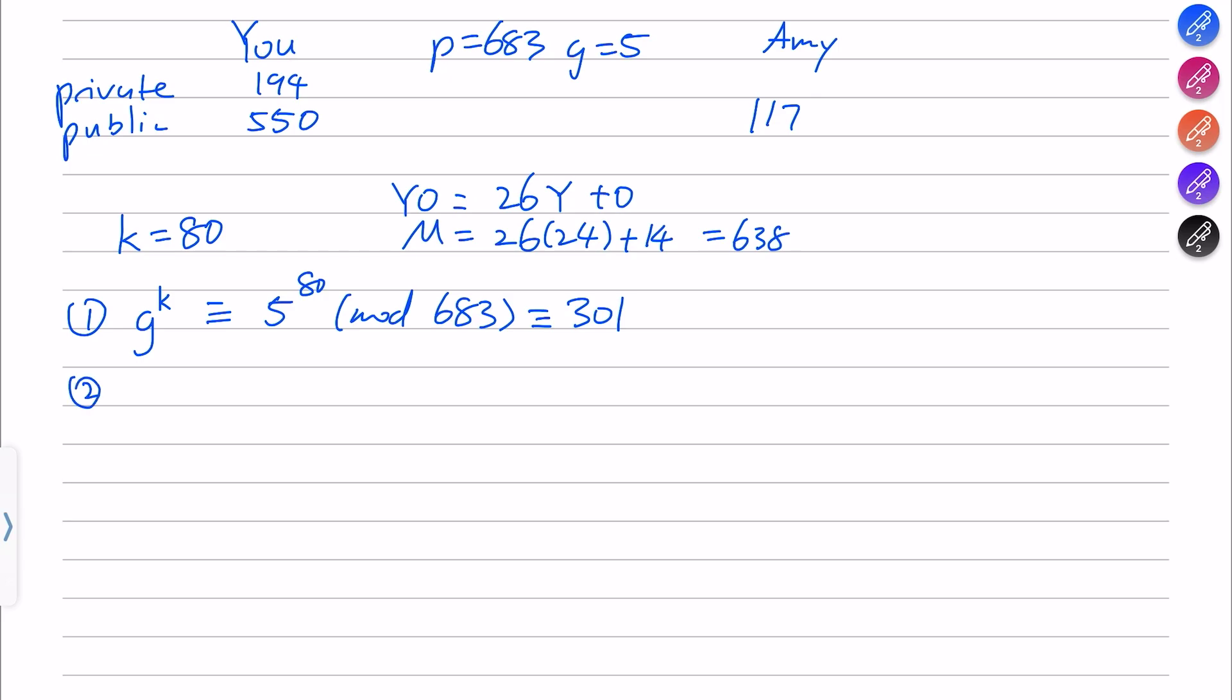And now you're going to calculate m times g a sub b to the k. You know m is 638. g to the power of a sub b is basically Amy's public key, 117. k as you've chosen is 80, and you want to mod that to 683. So that will be equal to 572 or congruent to 572. So in the end, you're going to send Amy 301, 572.